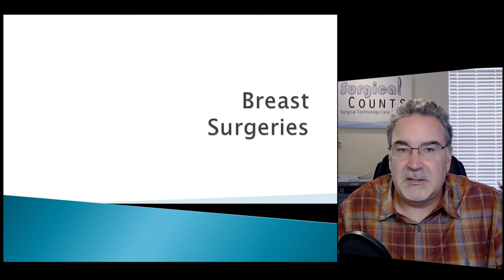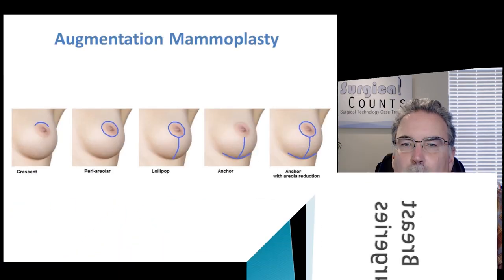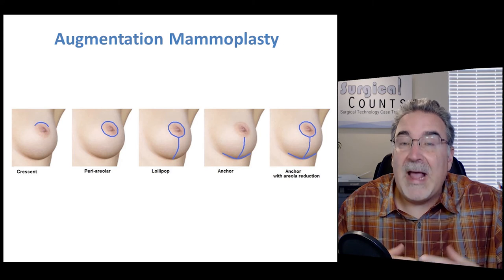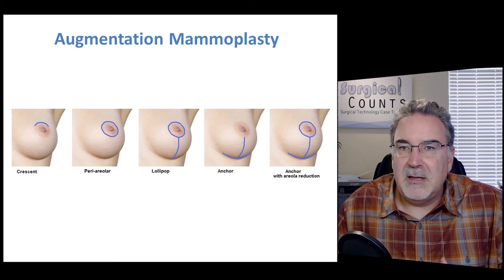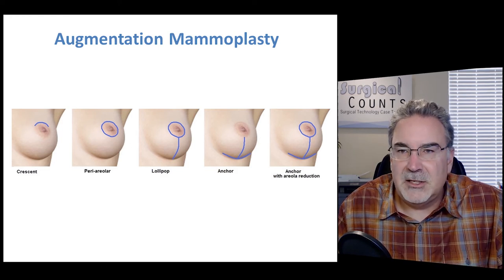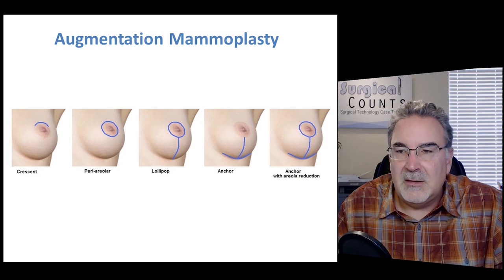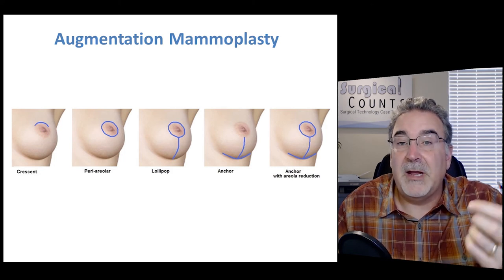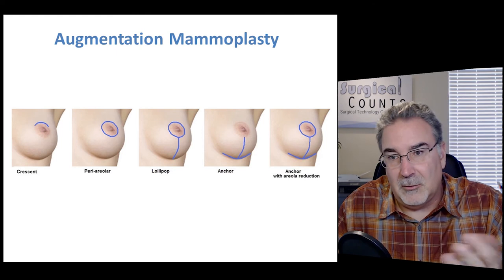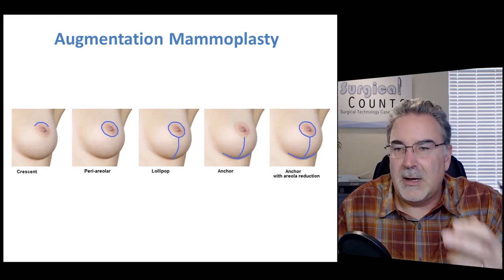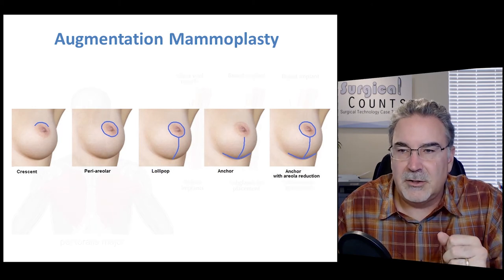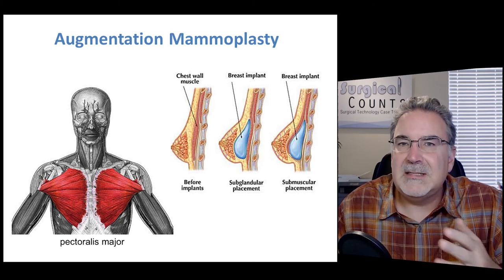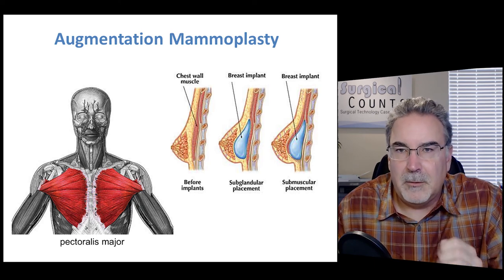A common type of plastic surgery is breast surgeries. Augmentation mammoplasty — mammoplasty meaning a reshaping of the breast, augmentation meaning adding to it — makes the breast larger. There are several different incisions the doctor can choose, named by shape: from the crescent, to the periareola or around the areola, to lollipop, anchor, or a combination with areola reduction. Breast augmentation usually involves an implant — used to be silicone, but nowadays more commonly a saline-filled bag placed behind the breast tissue to give a fuller appearance.